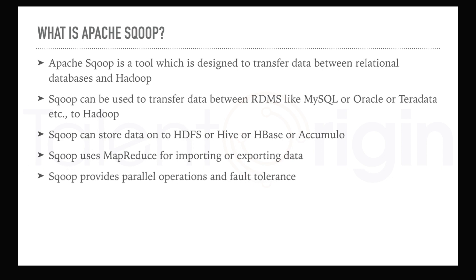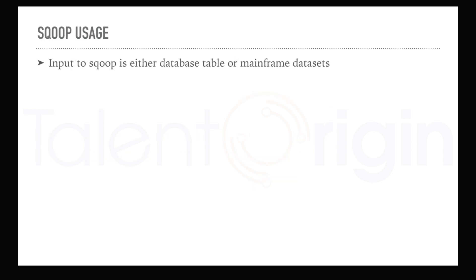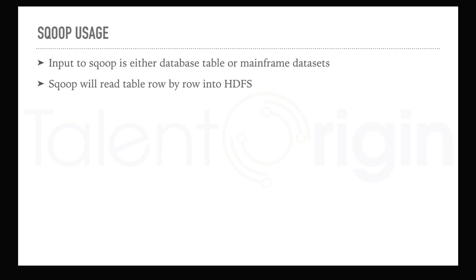Sqoop provides parallel operations and fault tolerance. Input to Sqoop can be either a database table or mainframe databases. Sqoop will read the table row by row and write that content into HDFS — which can be a Hive table, an HDFS location, HBase, or Accumulo.